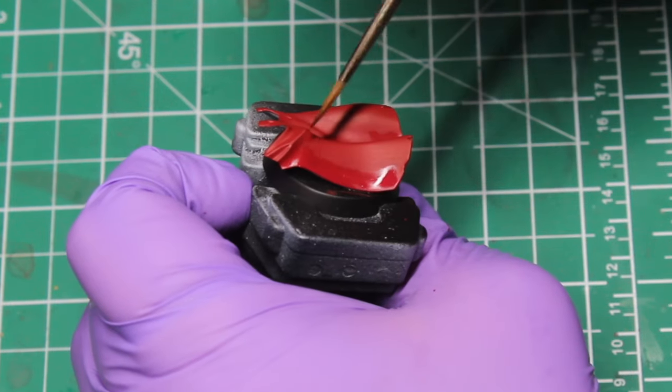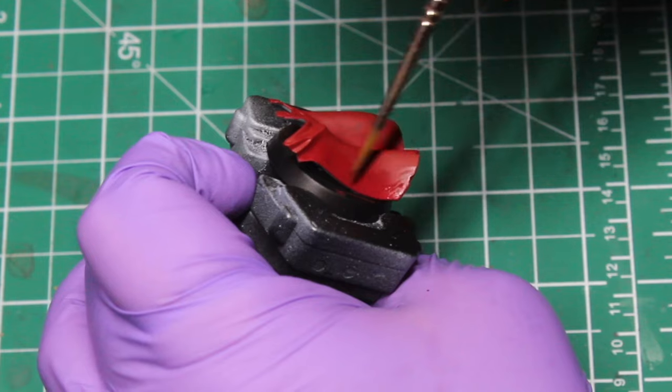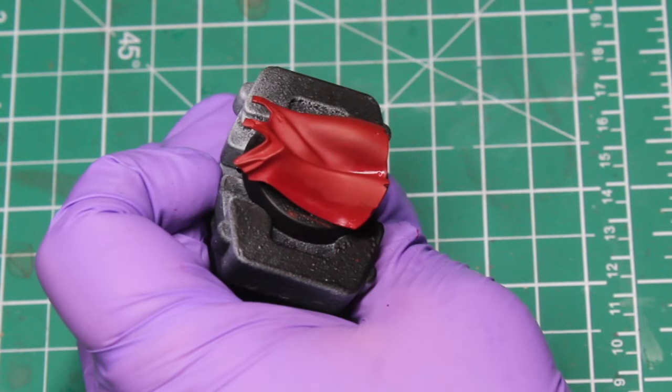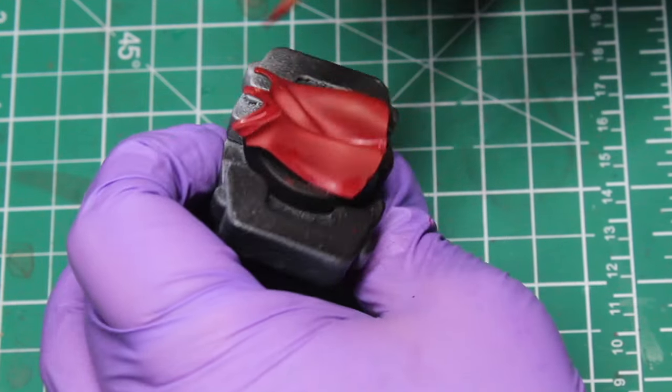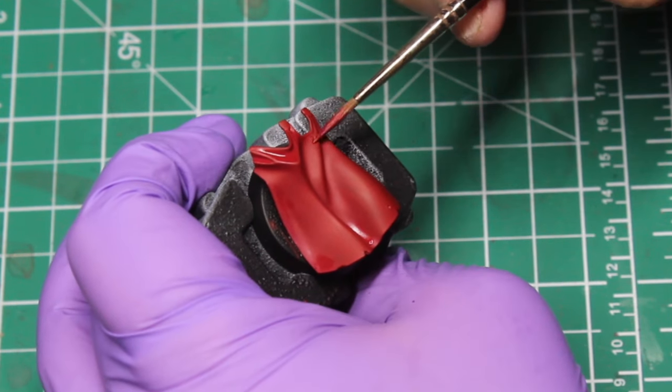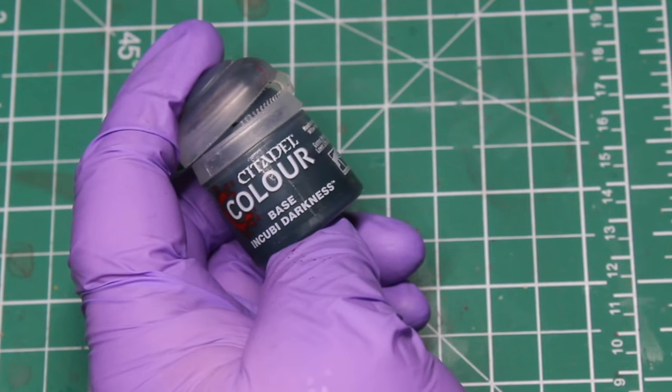As you build up your layers and your glazes that will get more intense. Then when we start adding in the next color to darken it down a lot more, we'll slowly but surely build up that shade. Speaking of which, we're going to be adding in some Incubi Darkness now.